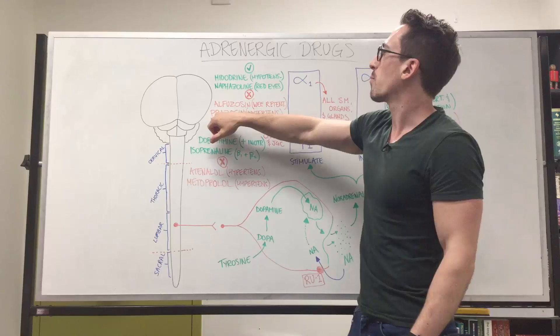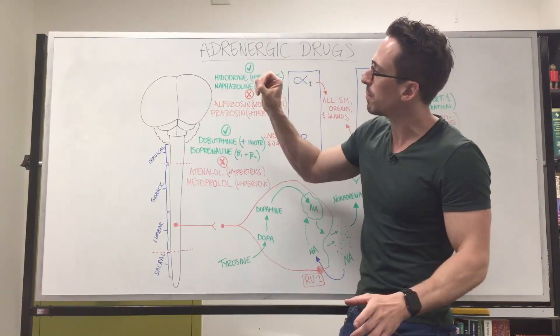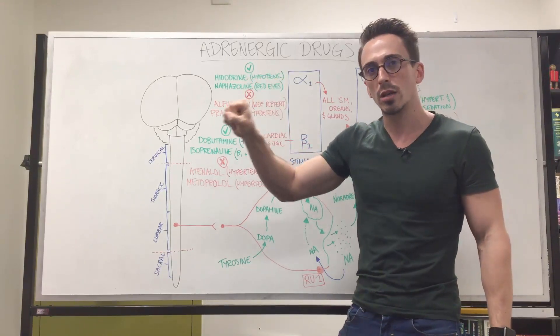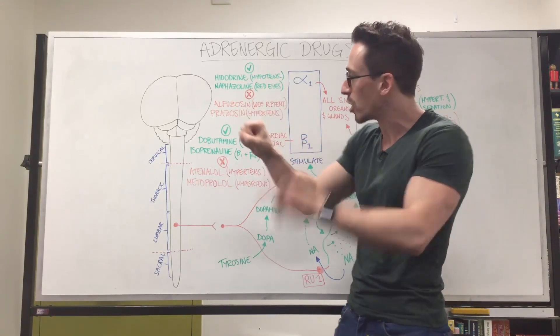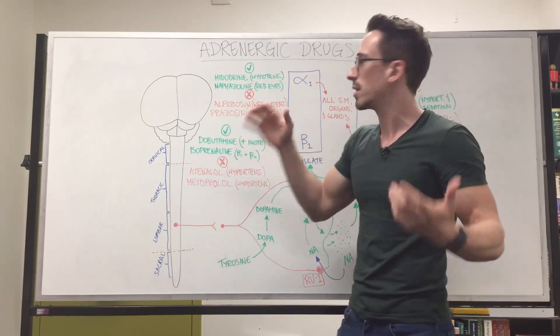We've also got prazosin. It's there to treat hypertension. Again, if alpha-1's stimulated too much, it may have a constriction of the blood vessels. So we treat with prazosin and it can dilate those blood vessels and treat the hypertension.